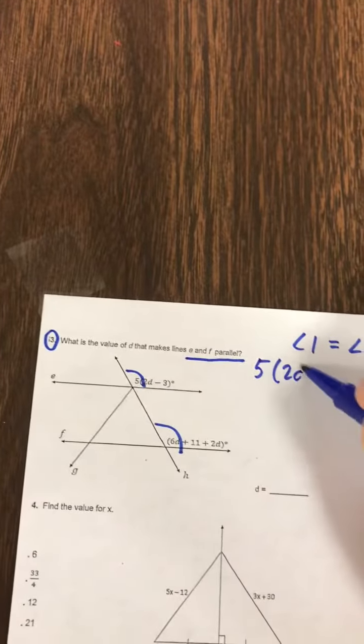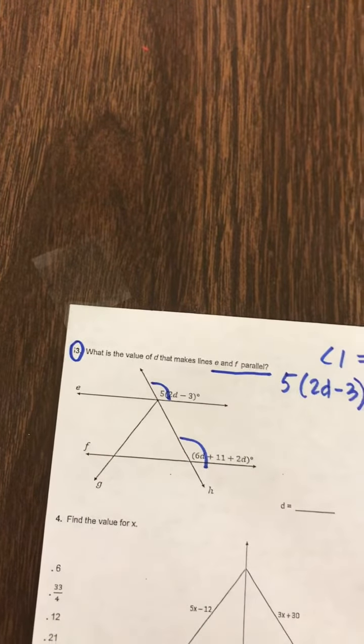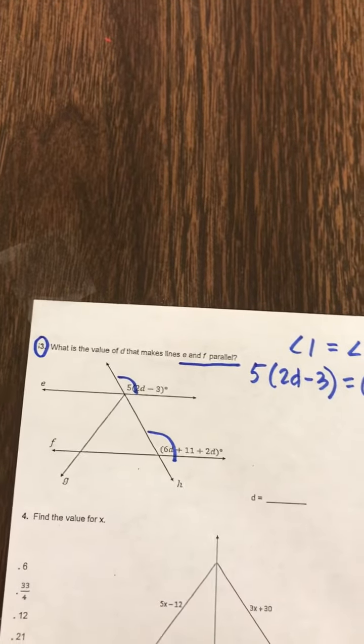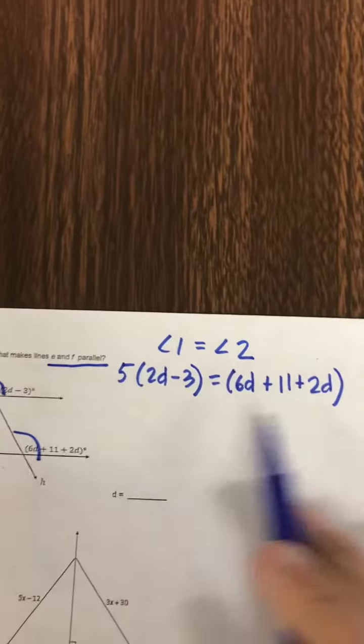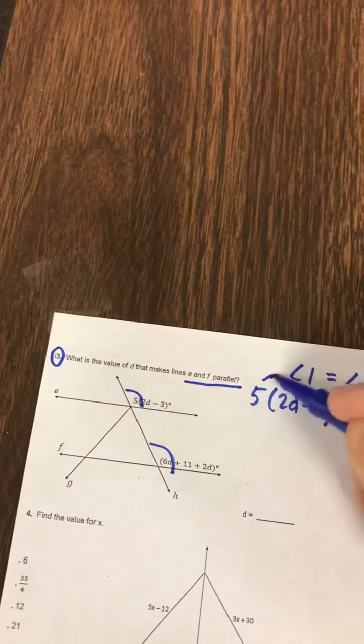So the first angle should equal the second angle if they are parallel. So if these two equations are equal, so 5 times 2D minus 3, if that is in fact equal to 6D plus 11 plus 2D, then you would be able to prove they're parallel. So let's solve for D.